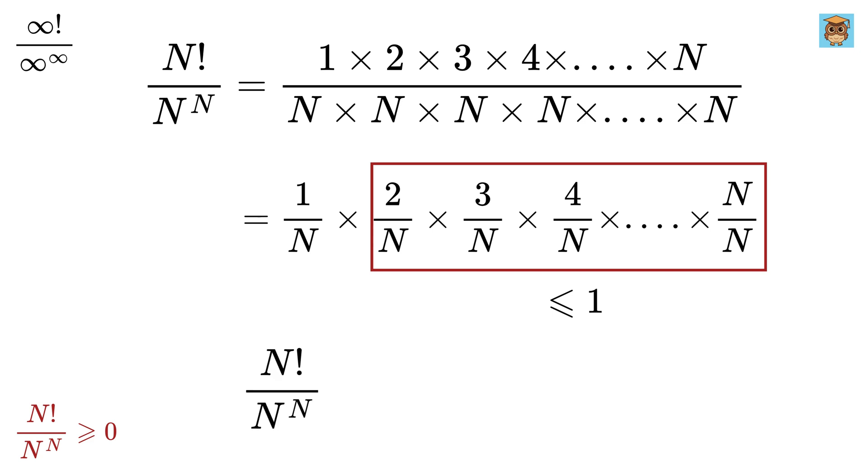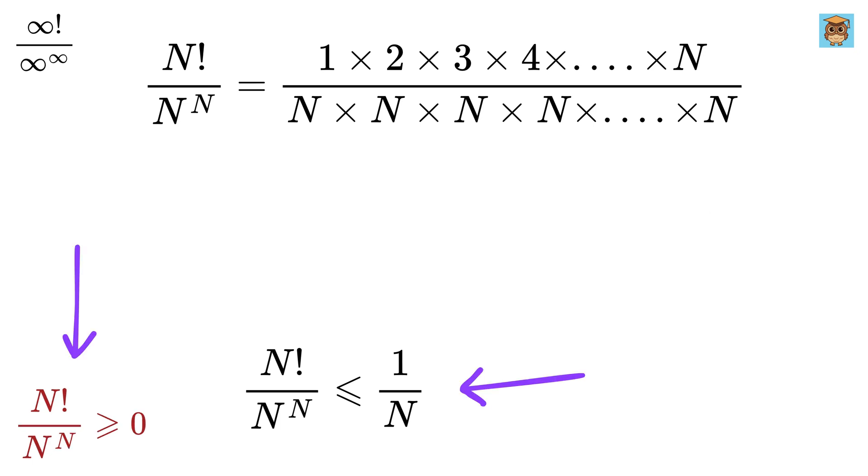So, n factorial divided by n to the power n will be less than or equal to 1 over n, isn't it? Therefore, from this and this, we get this ratio as greater than 0, but less than 1 over n.